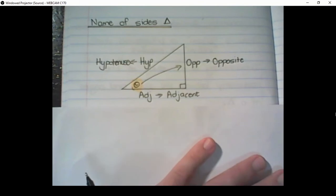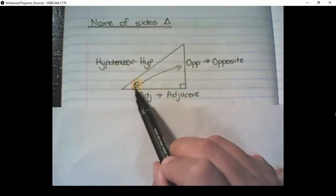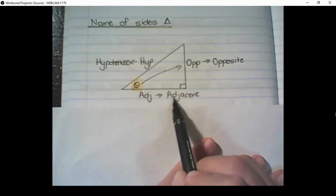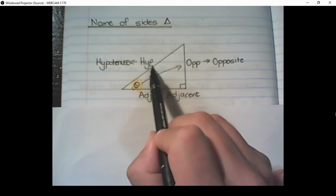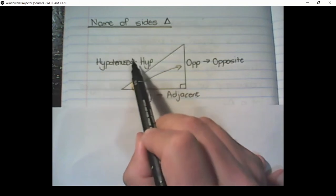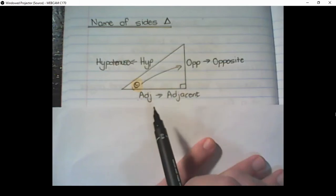And we will use the abbreviations OPP for opposite of theta, ADJ for adjacent to theta, and HYP for the hypotenuse. That is the side opposite the right angle of the triangle.